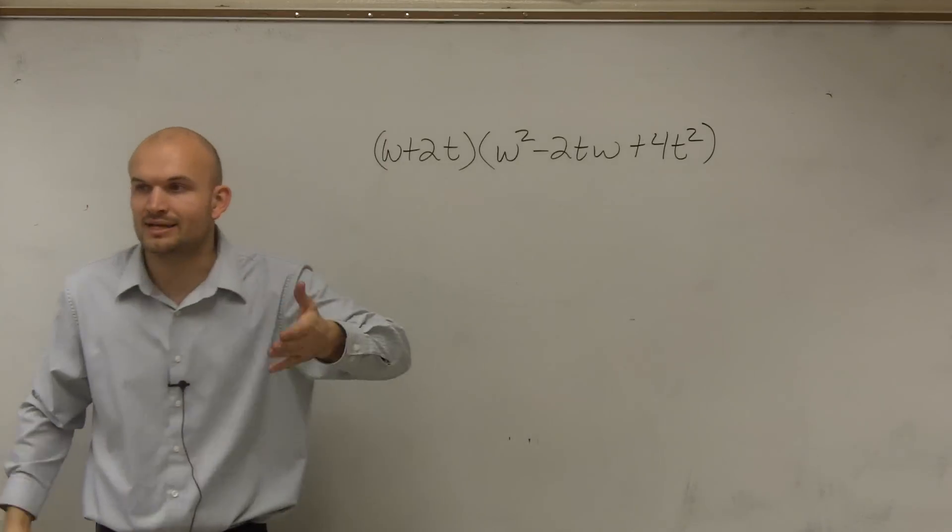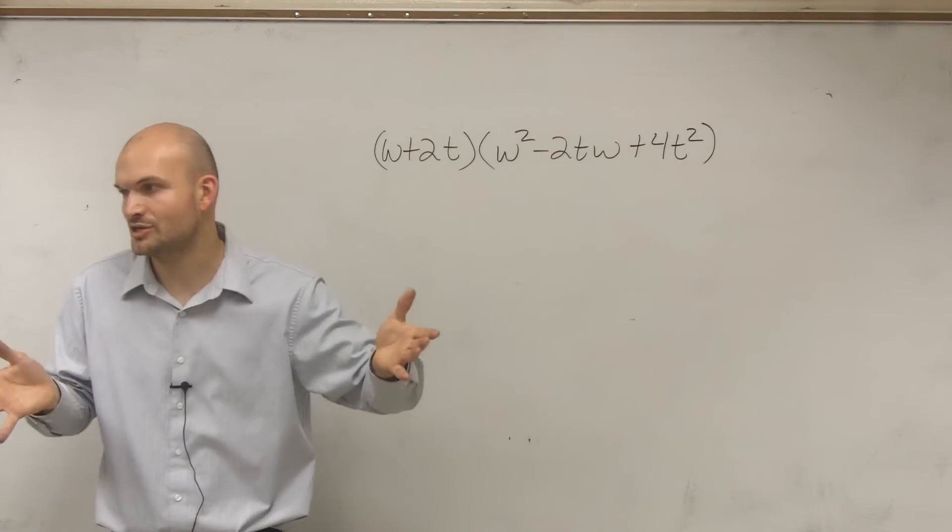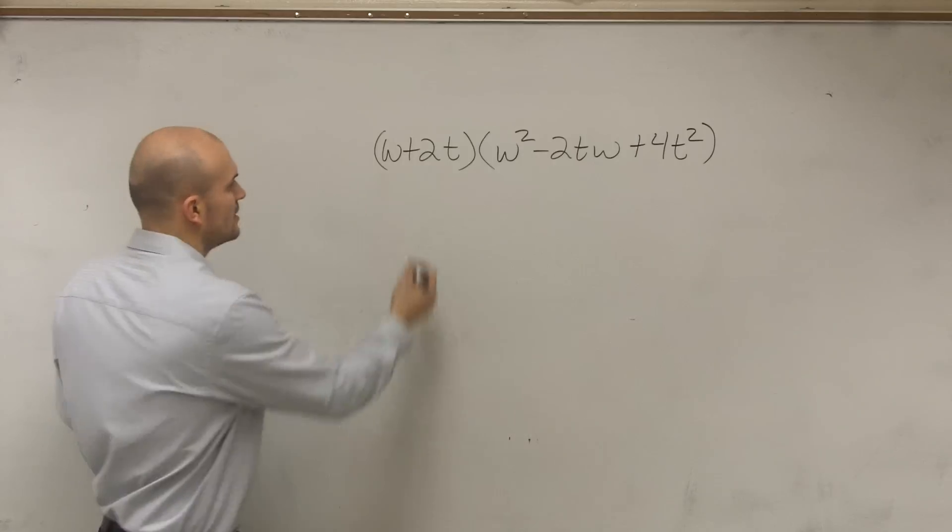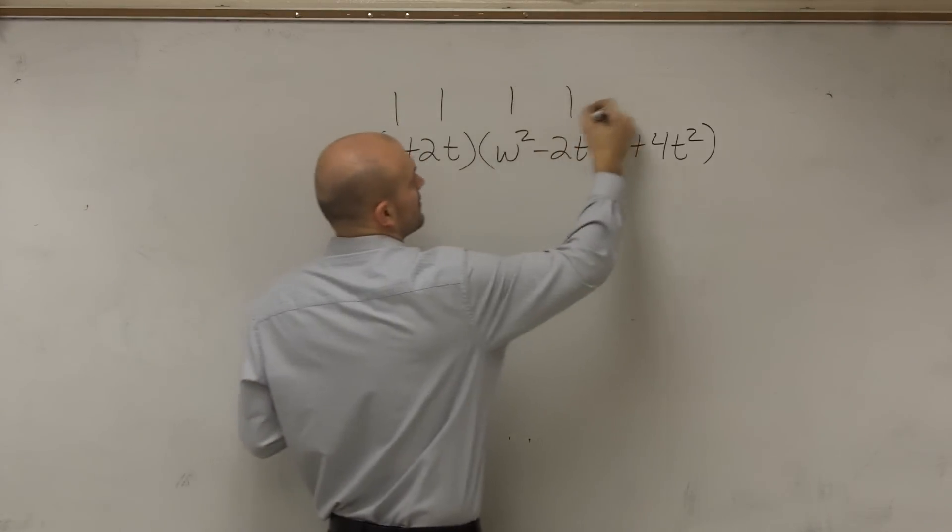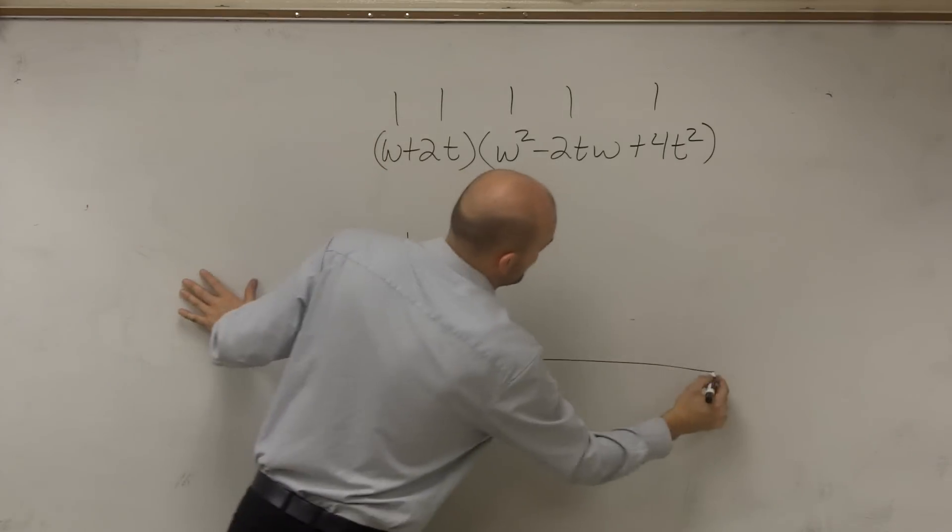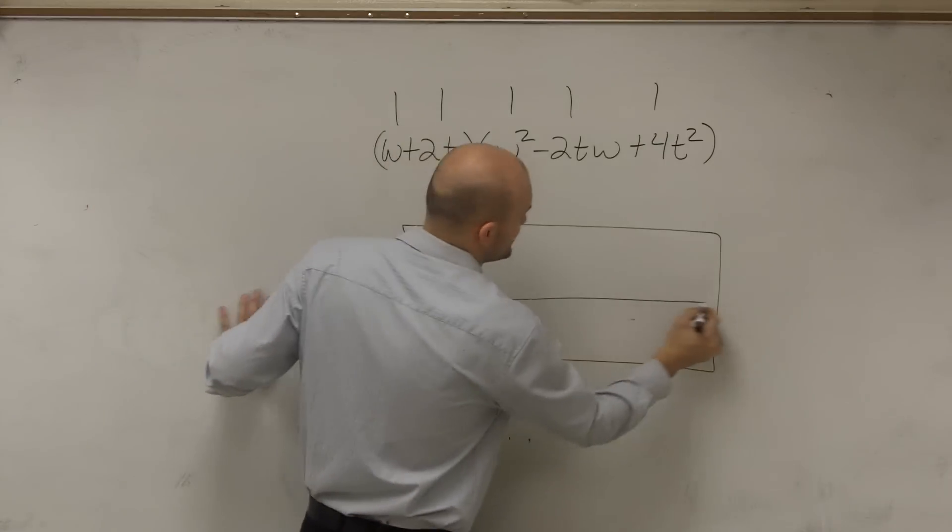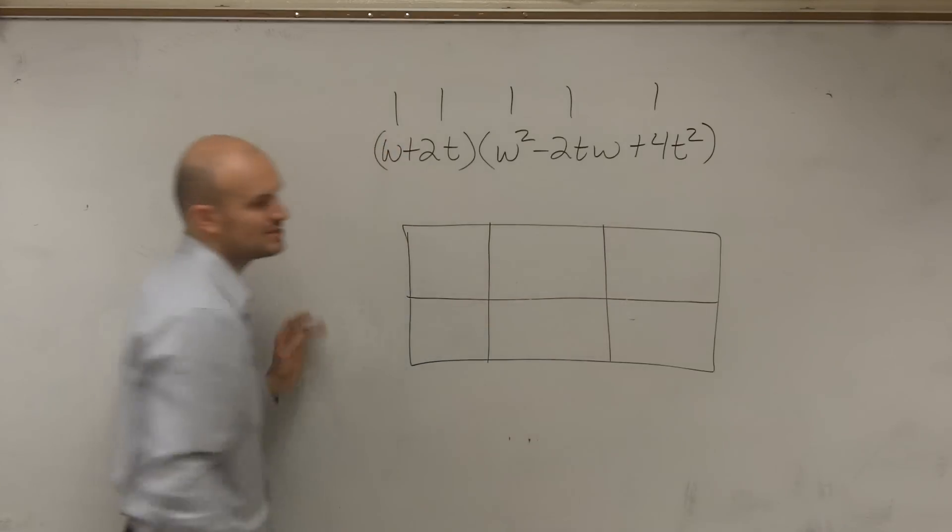When you're multiplying two expressions by each other, what you're essentially doing is creating an area. So what you notice is I have two terms here and I have three terms here. So what I'm going to do is I'm going to create a rectangle, a rectangle that is divided into two terms and three terms.